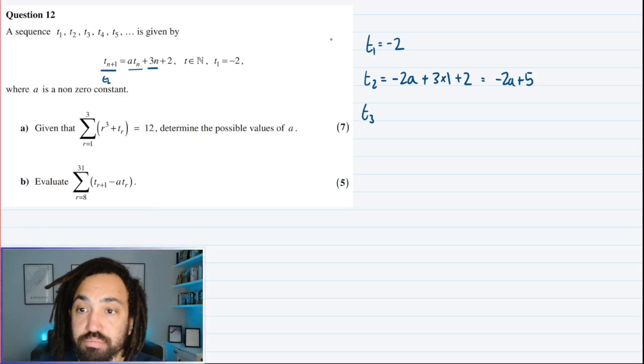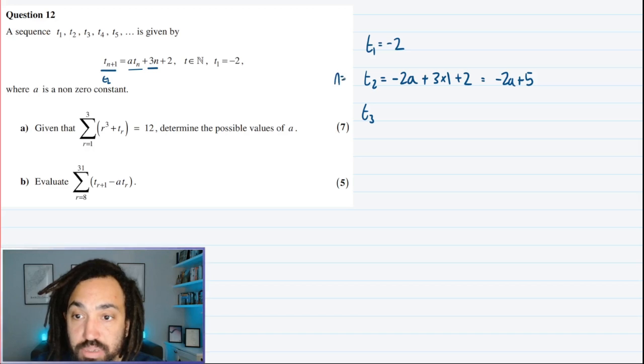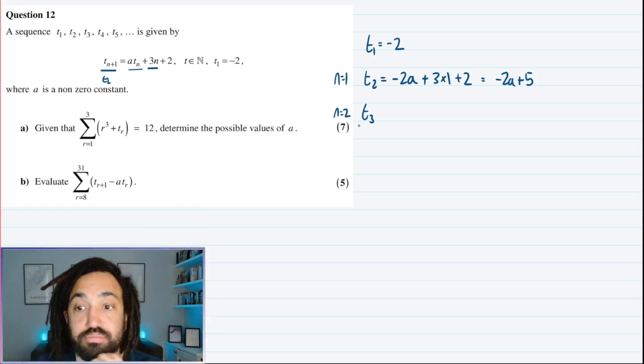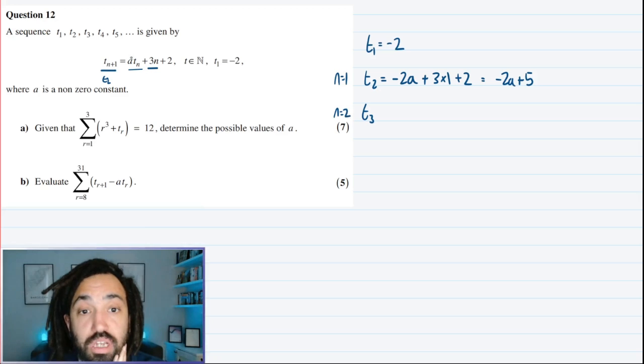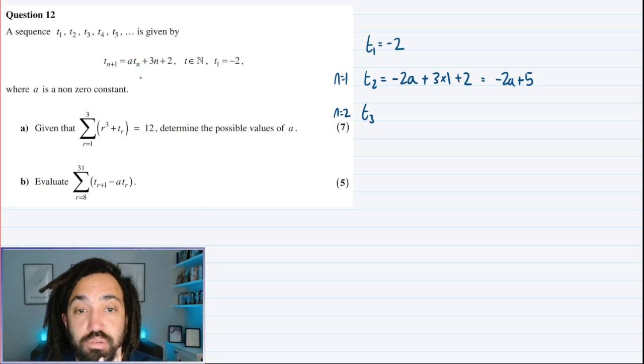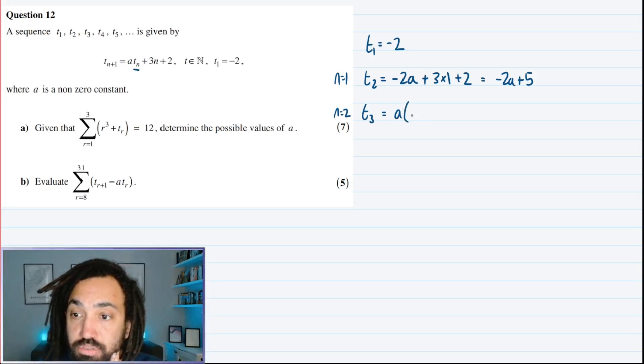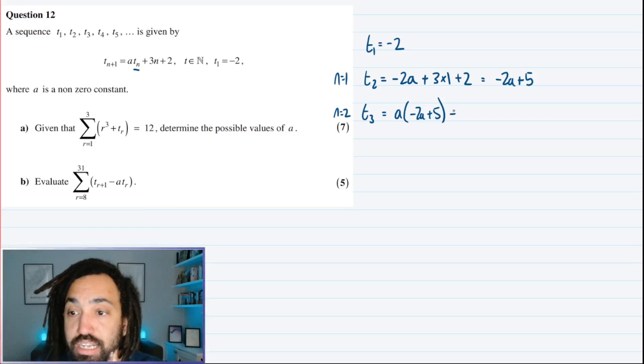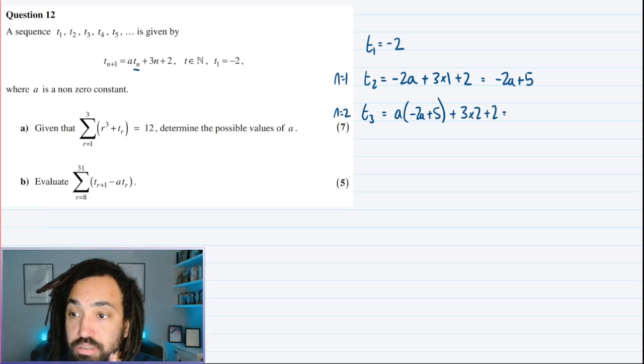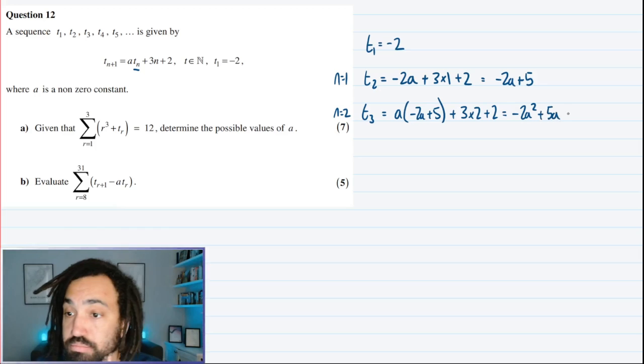Okay, now let's find t3. So once again, this is when n is 1, this is when n is 2. So when n is 2, I would get a multiplied by the last term, the term before, which was minus 2a plus 5. And then add on 3 lots of n, which is 2, and then add on 2 as well. So this will simplify to minus 2a squared plus 5a plus 6 plus 2 gives me plus 8.